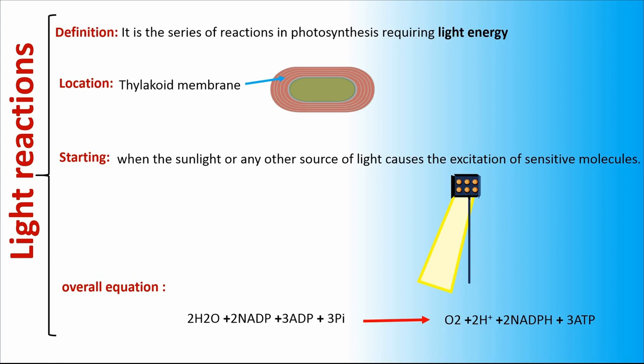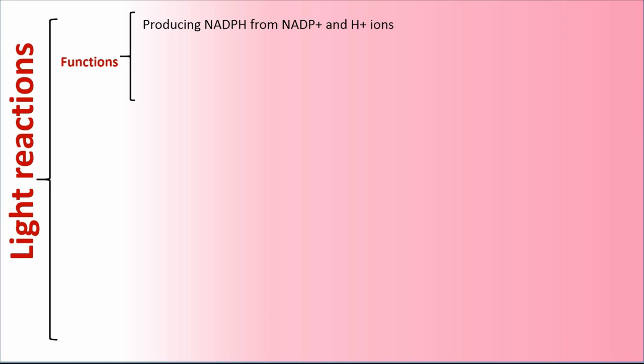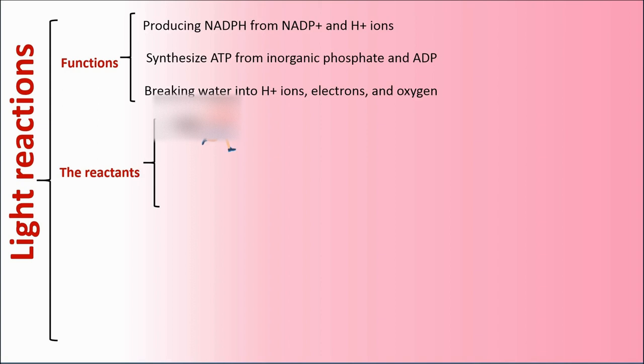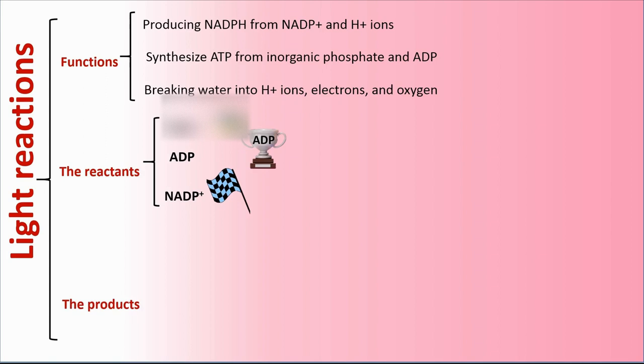Functions of Light Reactions: producing NADPH from NADP⁺ and proton ions; synthesizing ATP from inorganic phosphate and ADP; and breaking water into proton ions, electrons, and oxygen. The reactants of light reactions are water, ADP, and NADP⁺. The products of light reactions are oxygen, proton ions, NADPH, and ATP.